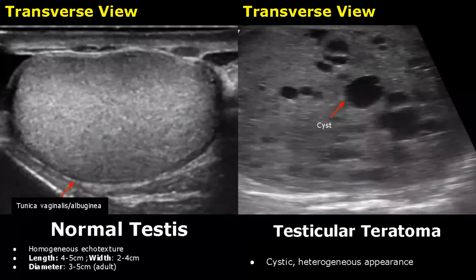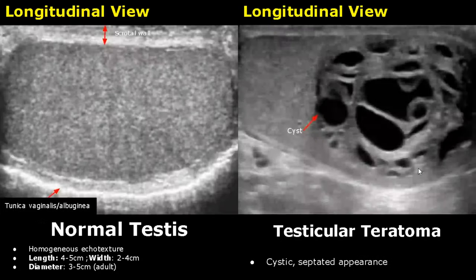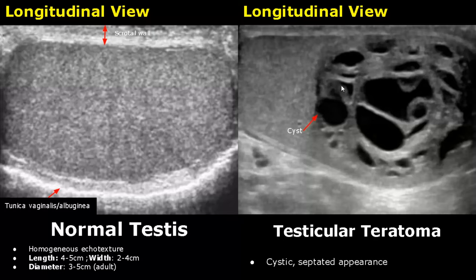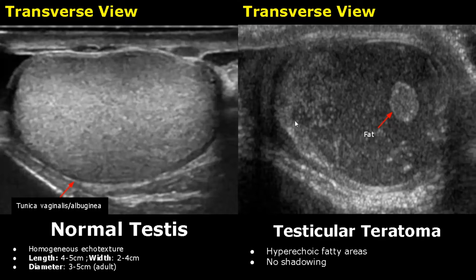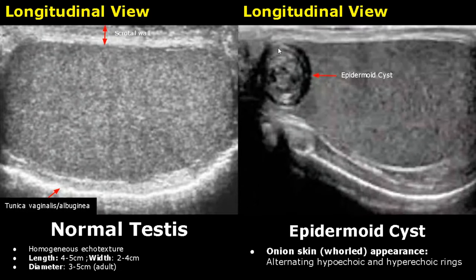Testicular teratoma is a mixed germ cell tumor. This tumor has a heterogeneous mass with cystic areas. Here is another image of teratoma — it has a cystic mass with multiple septations. A testicular teratoma can also have hyperechoic fatty areas with no posterior shadowing, and can have variable appearances overall.